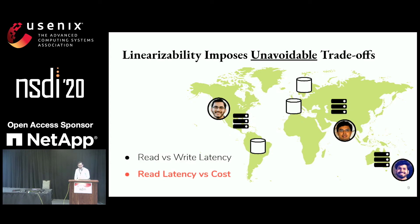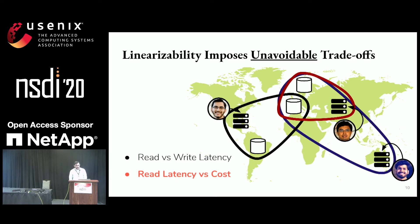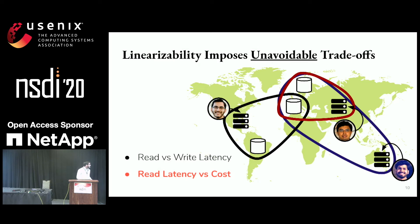Now we have a new collaborator located in New Zealand, and all of us are trying to read the data. Each of us is going to contact a read quorum. However, these might consist of data sites that are very far away, especially for our new collaborator accessing sites all the way in Europe.